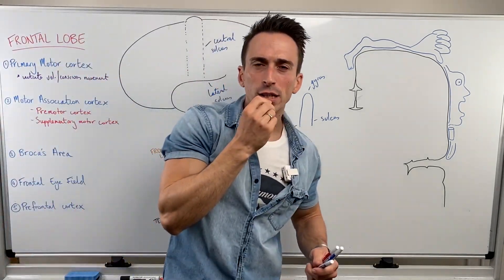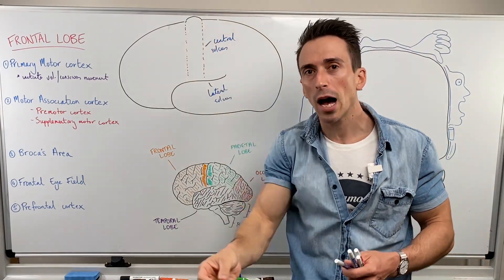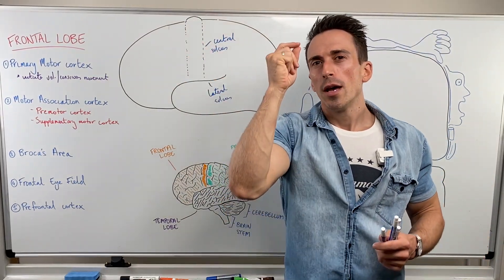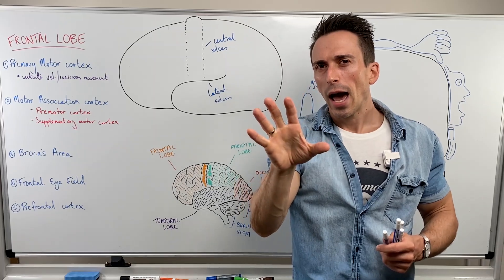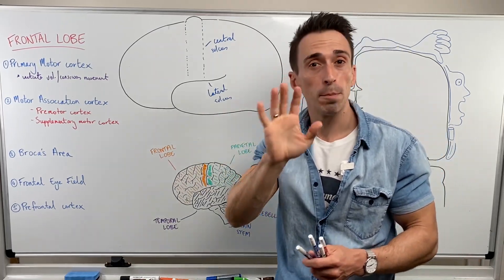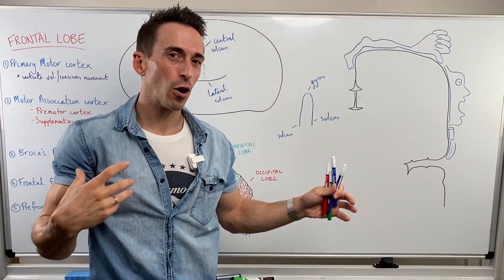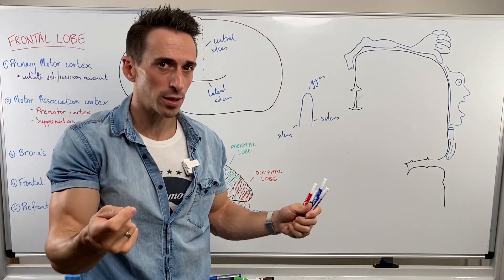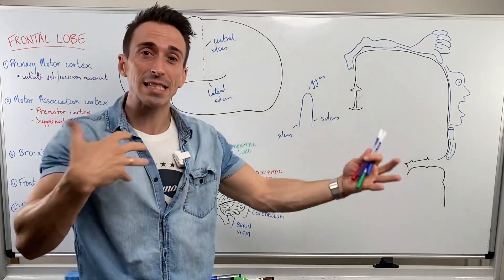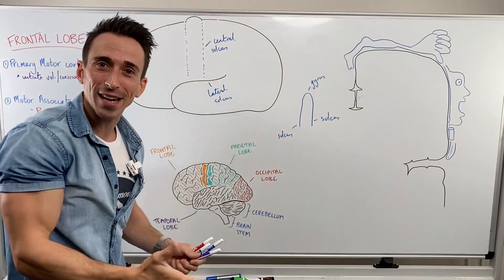If I want to move my mouth, the signal needs to be initiated from here. If I want to move my arm, again, the signal needs to start from here. So how does it know to move my arm or my mouth or my feet? There is actually a map of all the voluntary or consciously moved muscles — the skeletal muscles — mapped on the brain, specifically on this motor cortex.